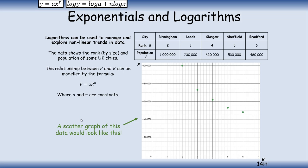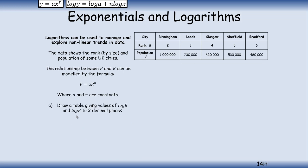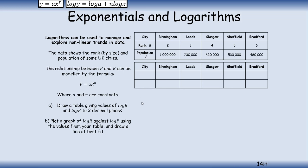Our task is: first, to tabulate the values of log r and log p to two decimal places; then to plot log r against log p and draw a line of best fit through the points. Use your calculator to fill in log base 10 of r and log base 10 of p across the table. Click pause now, fill those in, and you can check in just a minute.